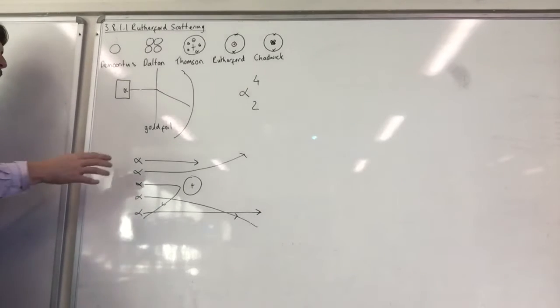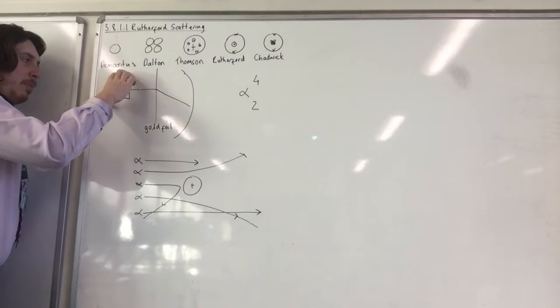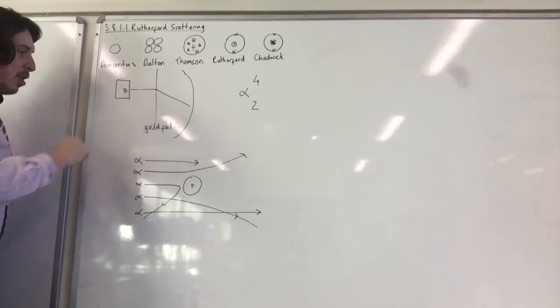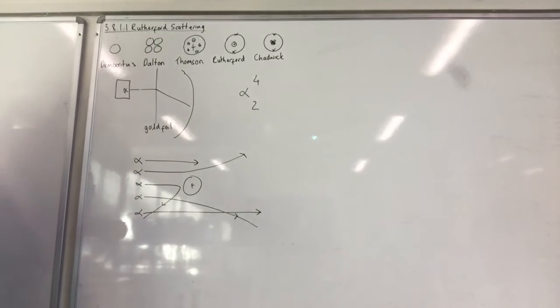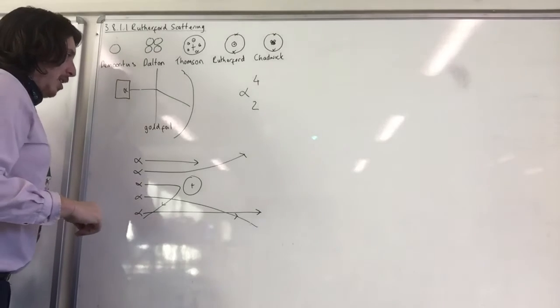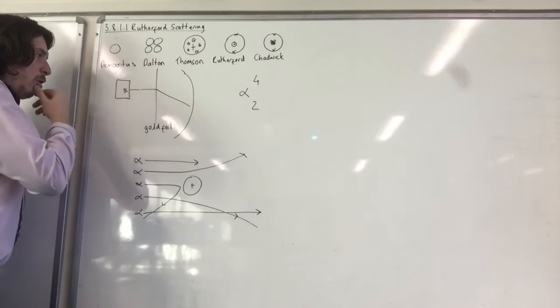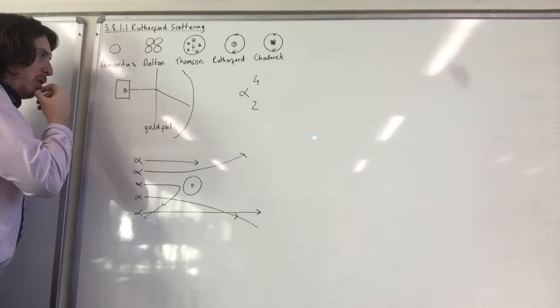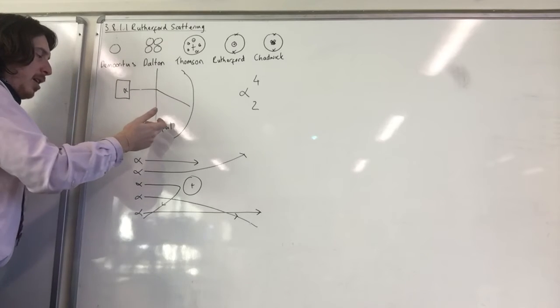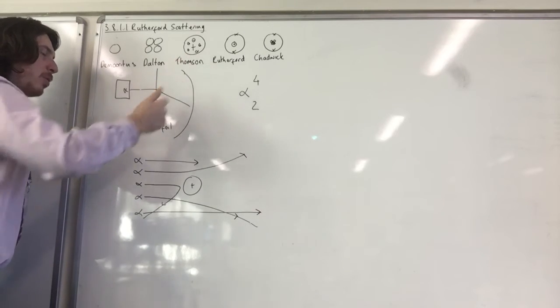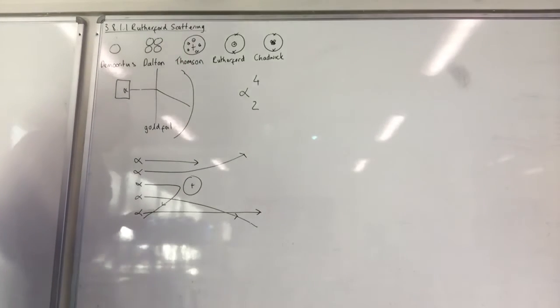So, what Rutherford had is he had a lead box with alpha particles and he would fire the alpha particles into the gold foil. And what we were expecting is either them to pass through, sail straight on through, or to be bounced back. And what was going on in this case is the idea that there was some deflection going on and the fluorescent screen was lighting up because it was being hit by alpha particles.